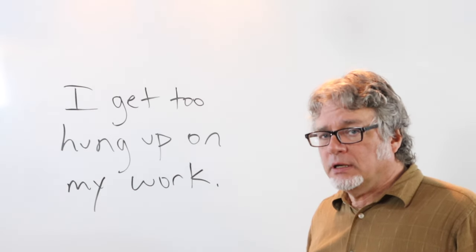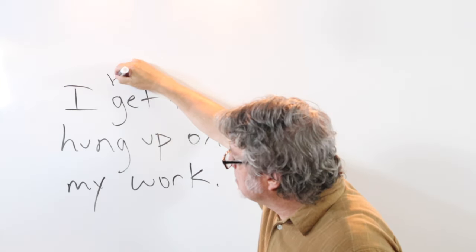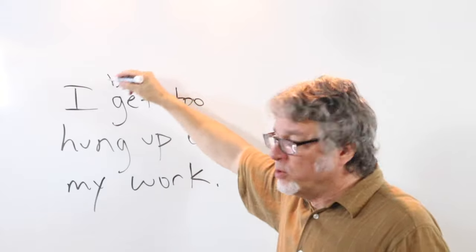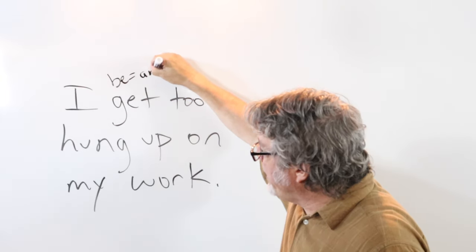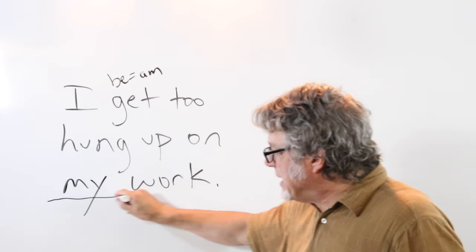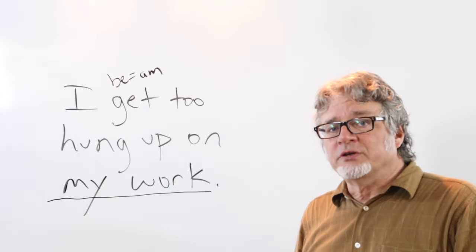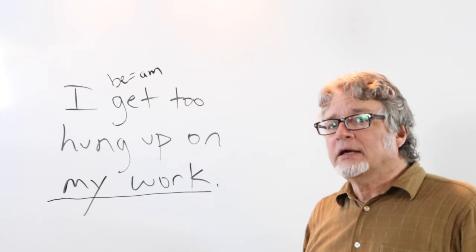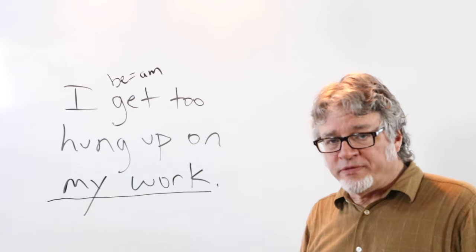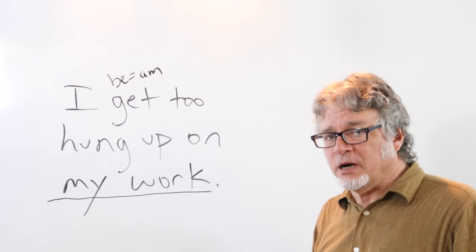'I get too hung up on my work' — here 'get' is the substitute for 'be.' If we changed 'get' to 'be,' it would be 'I am too hung up on my work.' This is something that people get too hung up on — they worry about their jobs or their activities so much that they are obsessed with them and become too concerned about what they do.